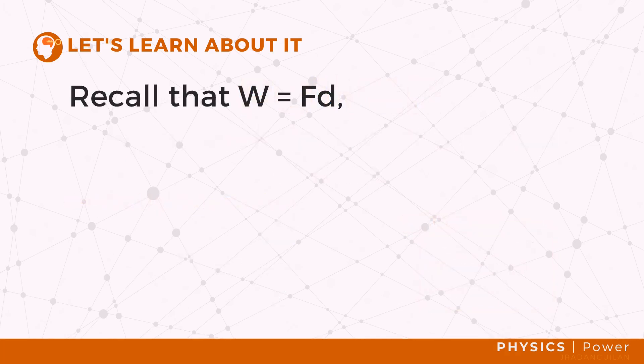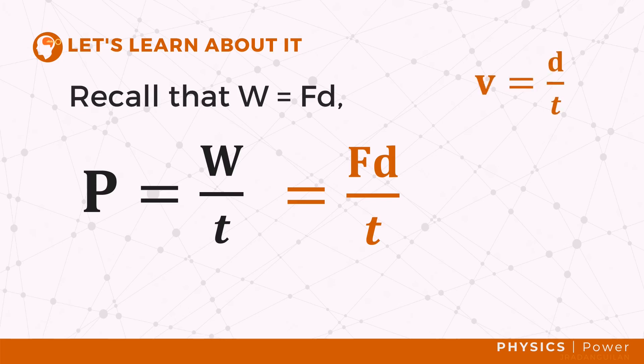Work done by a constant force that moves the object at a constant velocity is W equals FD. Thus, the work done on an object at a constant velocity is P equals FD over T. And since V equals D over T, we can say that P is equal to FV.